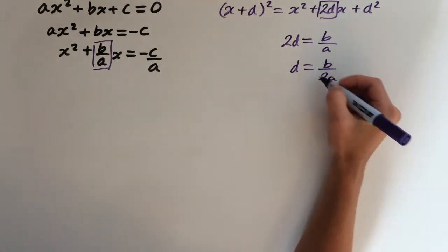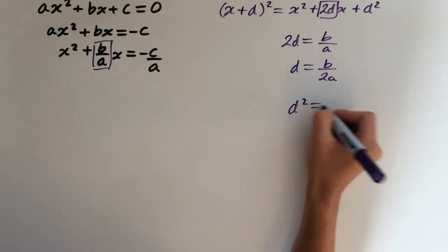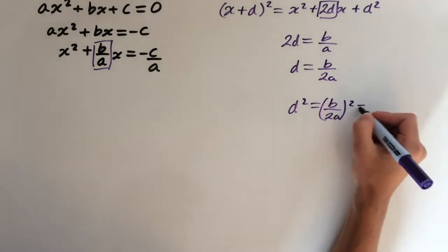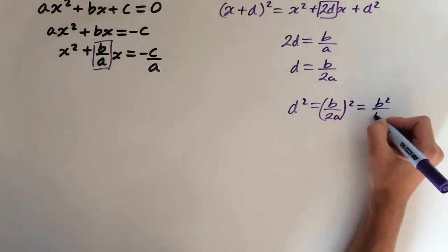And we're missing the d² essentially, so we need to add on this square. So d² equals b over 2a all squared. This expands out as b² over 4a².